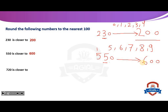Another example: 720 is closer to what? We keep 0 as it is and look at the tens digit, which is 2. That follows rule number 1 — tens digit 0–4 — so we convert tens to 0 and write the hundreds as it is. So 720 is closer to 700.